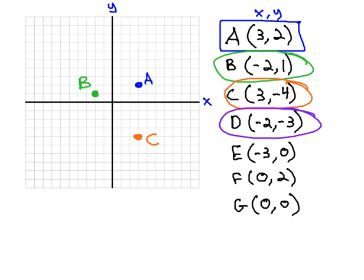D is at negative 2, negative 3. Negative 2 is to the left, and 3 moves us down, 3 units to get us to point D.